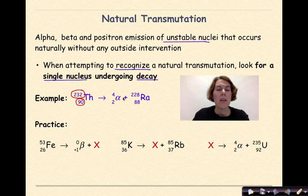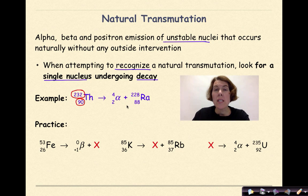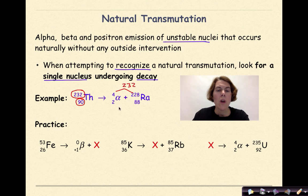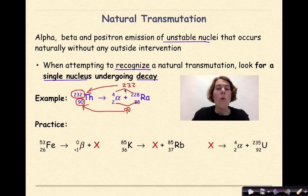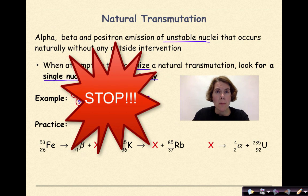This is a decay reaction because we only have one reactant and more than one product. When thorium-232 undergoes alpha decay, it forms radium-228. We can verify this is balanced: 4 + 228 = 232 for the mass numbers, and 2 + 88 = 90 for the atomic numbers — everything matches.